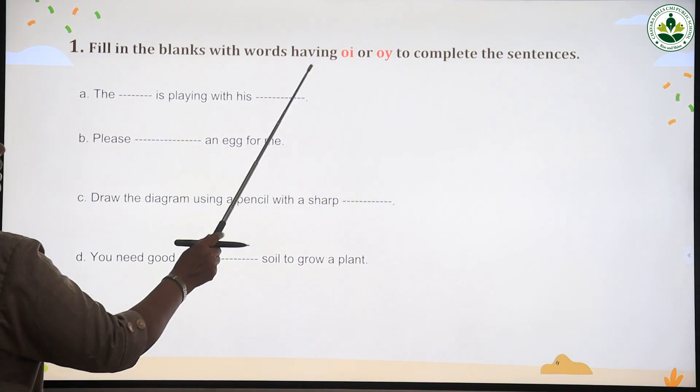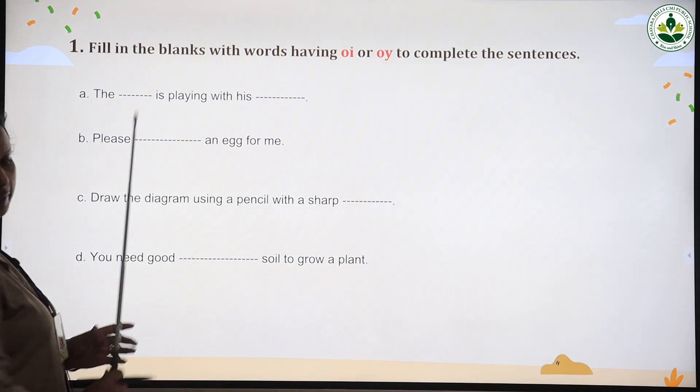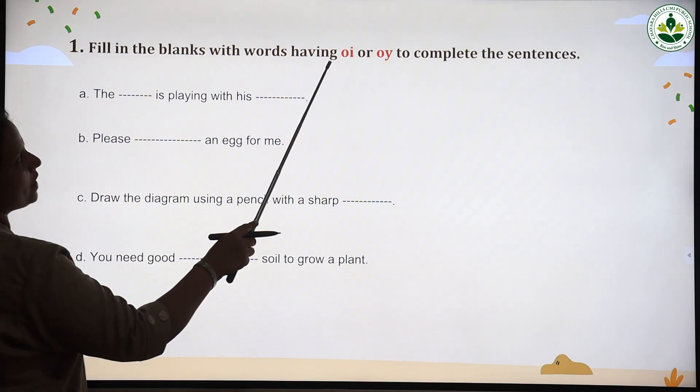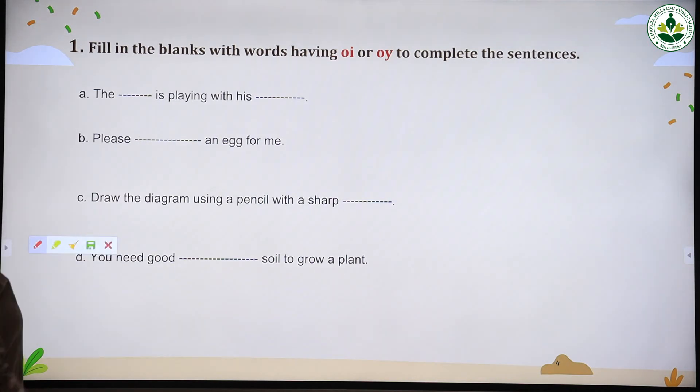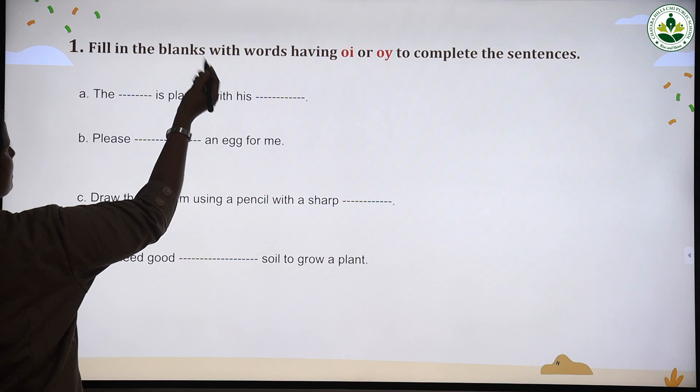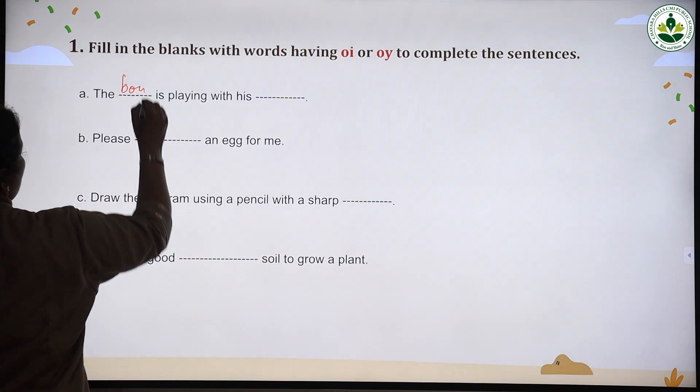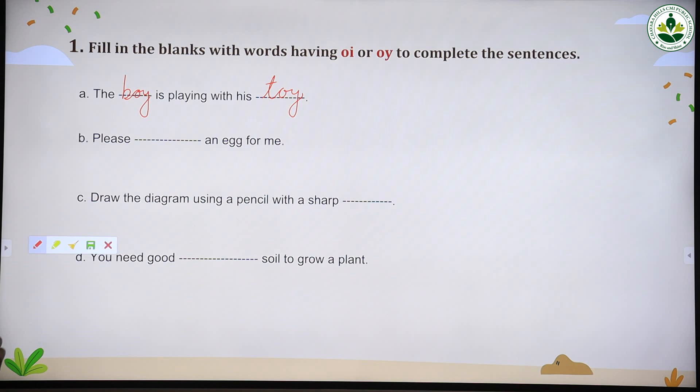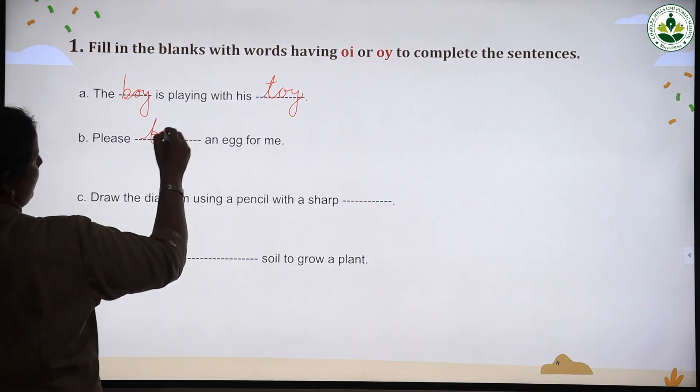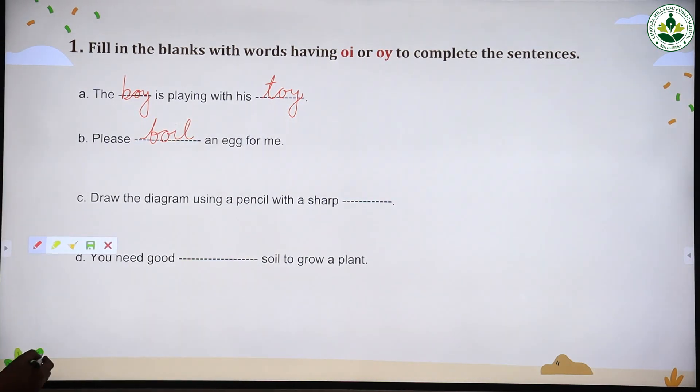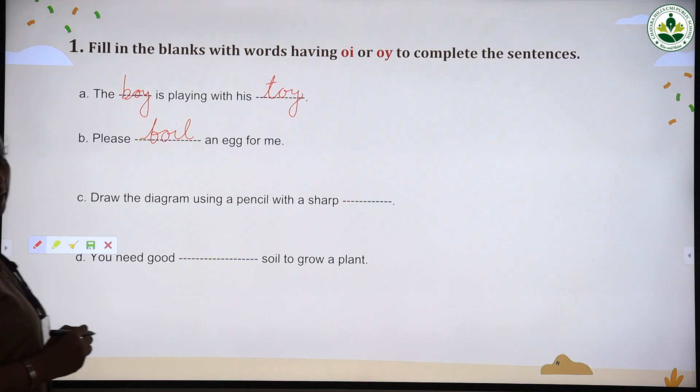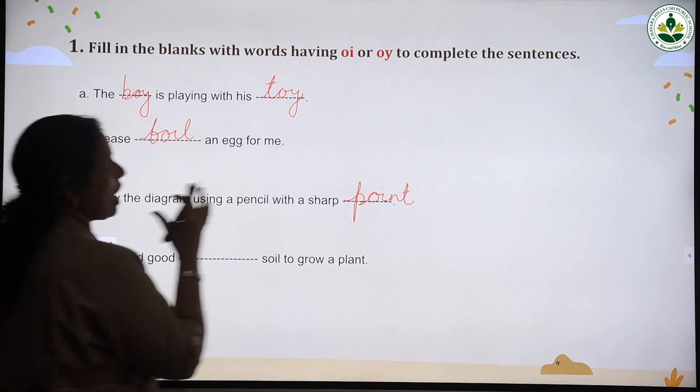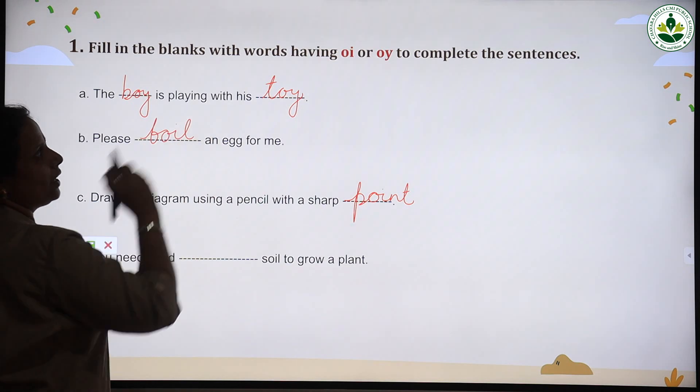Fill in the blanks with words having o-i or o-y to complete the sentence. There are some blank spaces. You have to fill these spaces with words with o-i or o-y. The dash is playing with his dash. Boy is playing with his toy. Please boil an egg for me. Draw the diagram using a pencil with a sharp point, p-o-i-n-t.